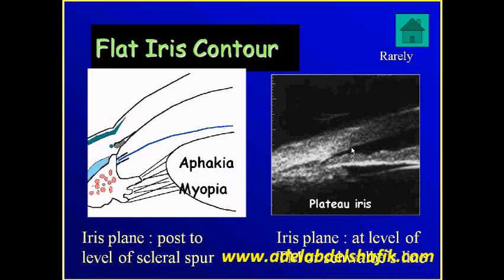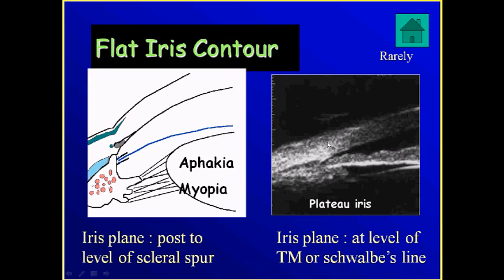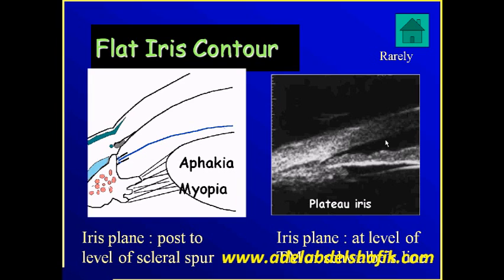Plateau iris is a condition where the ciliary processes are thickened, enlarged, and pushing the peripheral part of the iris forward, resulting in an occluded angle. The difference between myopia or aphakia and plateau iris: in myopia/aphakia the iris is drawn back and the angle is widely opened, but in plateau iris the ciliary body pushes the iris forward so the iris is seen at the level of the trabecular meshwork or Schwalbe's line — the angle is closed.